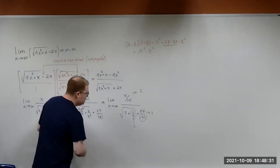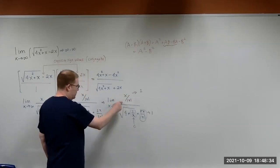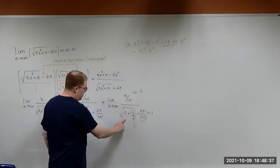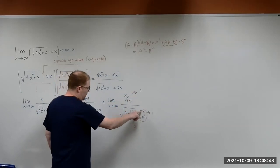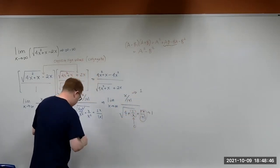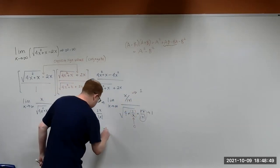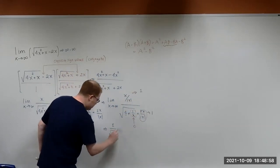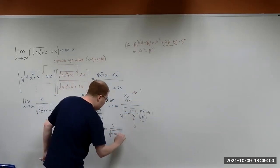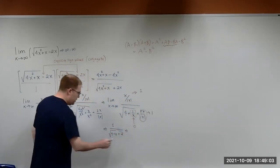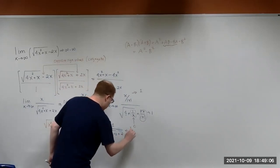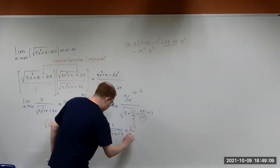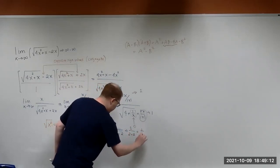Now we have our results. The limit approaches: the x over absolute value of x goes to 1, and this gives us the square root of 4 plus 0, plus 2. So that's going to give us 1 over the square root of 4 plus 2, which is 1 over 2 plus 2, which gives us 1 over 4.